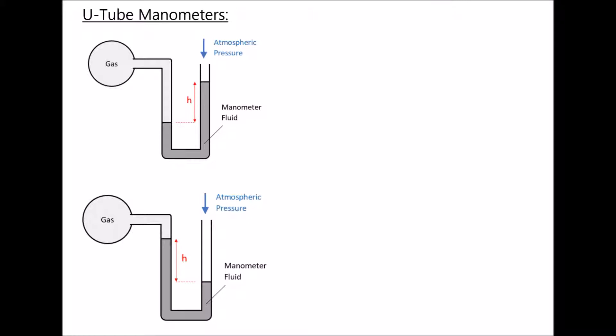So we have two different scenarios here. In the first scenario we have a gas in a container and that container is connected to a U-tube manometer, which is going to enable us to measure the pressure of the gas in that container. We have a similar setup in the second scenario, but in the second scenario the pressure of the gas is actually less than atmospheric pressure, whereas in the first scenario the pressure of the gas is higher than atmospheric pressure.